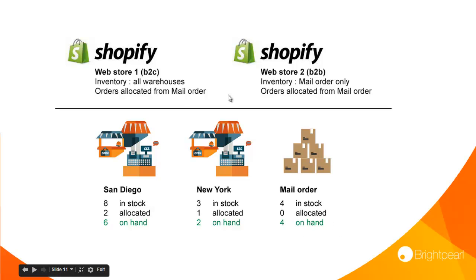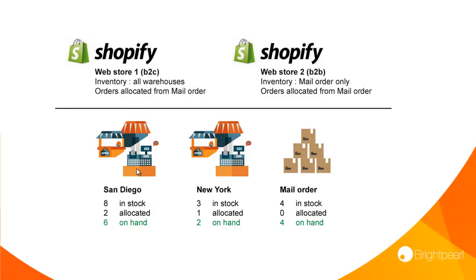Both Shopify stores download sales into the mail order warehouse because that's where they'll usually be shipped from. Which means that if you sell something that's not in this warehouse, you need to transfer it from your other stores, or ship that item direct from the New York store or the San Diego store. There's a separate video that shows you how to do partial shipment in the sales order processing video.